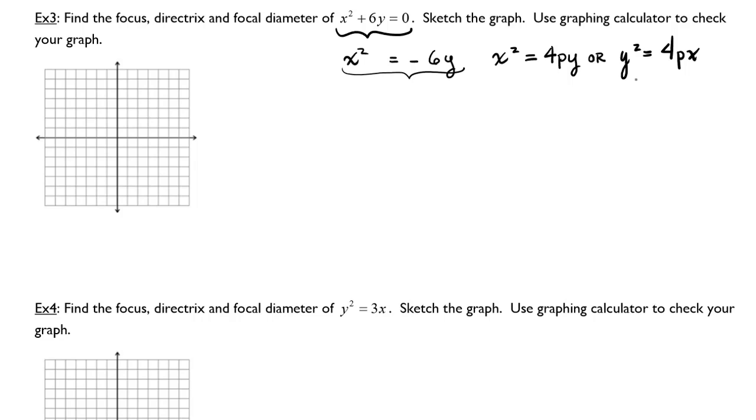Now, this is if you have a parabola opening sideways, and x squared equals 4py is opening upwards or downwards. Since I know that the parabola is going to be of the form opening upwards or downwards, we're going to use the first equation: x squared equals 4py.